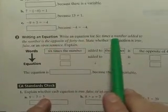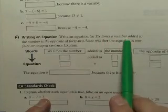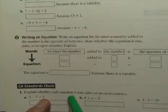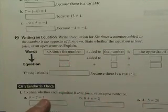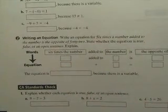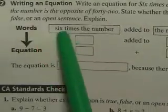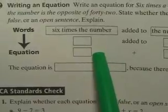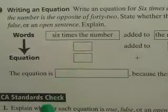Number two, it says, write an equation for six times a number, added to the number, is the opposite of 42. And then state whether it's true, false, or open. So we have words, and they already put the words in there for you. And then we're trying to make an equation out of it. So, six times a number.